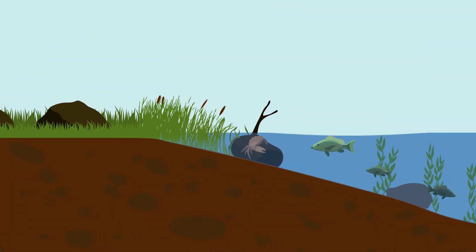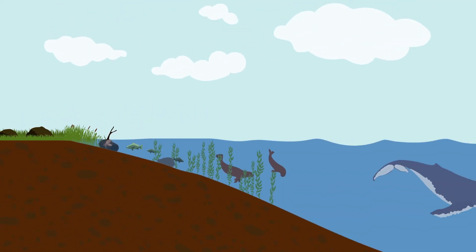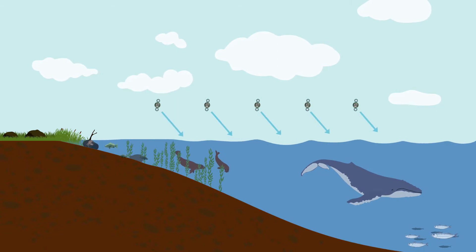Most carbon is stored in rocks and sediments, while the rest is stored in the ocean, atmosphere, and living organisms. These are the reservoirs or sinks through which carbon cycles.